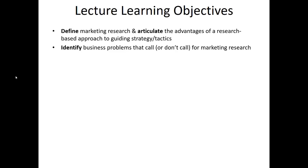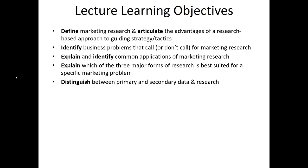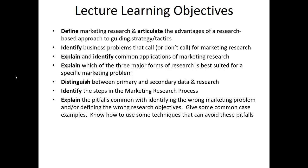We're going to learn how to identify business problems that do or don't call for marketing research. We'll be able to explain and identify some of the common applications of marketing research, explain which of the three major forms of research is best suited for a specific marketing problem, and distinguish between primary and secondary data and research. We'll also identify the marketing research process, and finally explain some of the common pitfalls that occur when we try to identify marketing problems, with some common examples of these.